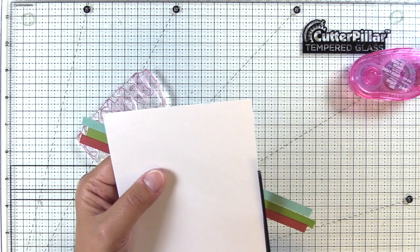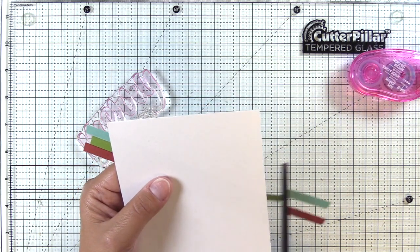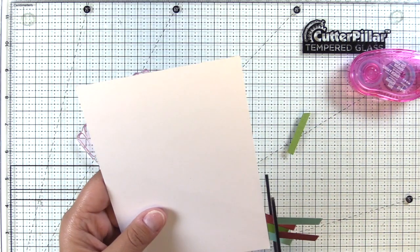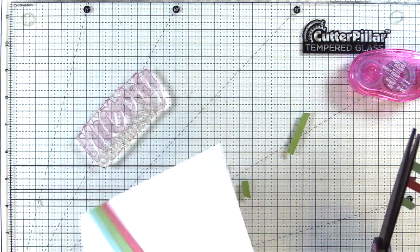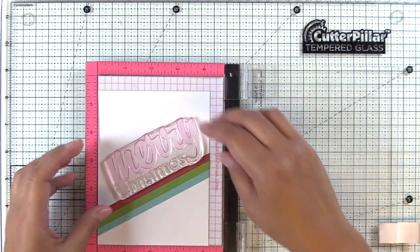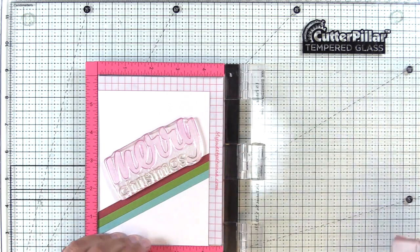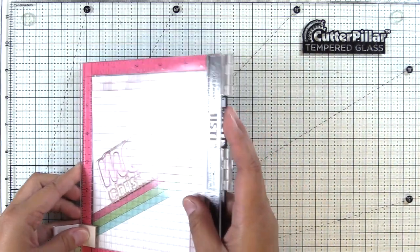I've just put some adhesive on the back of these strips and I've gone ahead and adhered them down to an A2 size piece of Neenah Classic Crest Solar White cardstock, and this is an 80 pound. I thought it'd be easier to put the strips down first so that I could get my sentiment lined up with that.